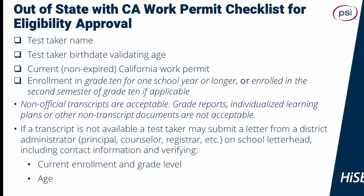The checklist for out-of-state with California work permit for eligibility approval includes the test taker name, test taker birth date validating age, a current non-expired California work permit, and enrollment in grade 10 for one school year or longer, or enrolled in the second semester of grade 10 if applicable. Non-official transcripts are acceptable; grade reports, individualized learning plans, and other non-transcript documents are not acceptable. If a transcript is not available, the test taker may also submit a letter from a district administrator, principal, counselor, registrar, etc., on school letterhead, including contact information and verifying current enrollment and grade level, as well as age.